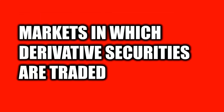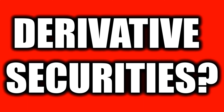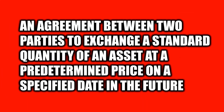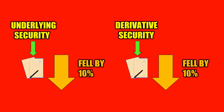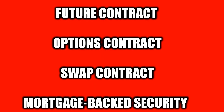Derivative markets are markets in which derivative securities are traded. Derivative securities are an agreement between two parties to exchange a standard quantity of an asset at a predetermined price on a specified date in the future. Simply put, it is a security whose value depends upon the value of another asset. The value of a convertible bond, for example, depends upon the value of the underlying stock, and thus it is a derivative security. So if the underlying security changes, then the value of the derivative security changes as well. Derivative securities include futures contracts, auction contracts, swap contracts, or mortgage-backed securities.